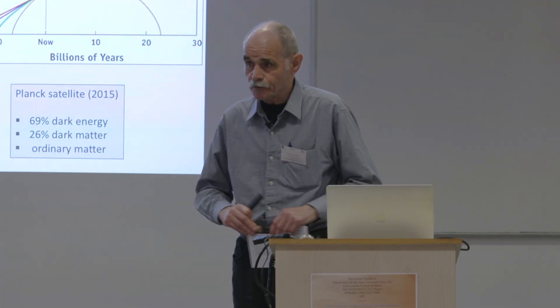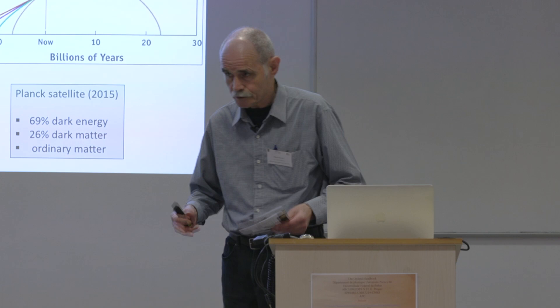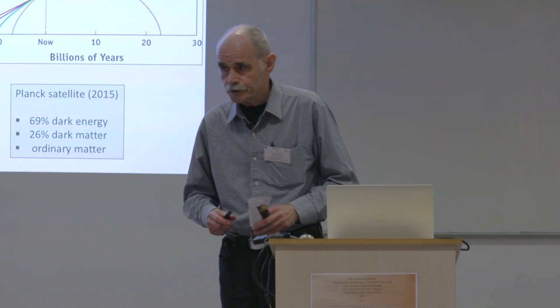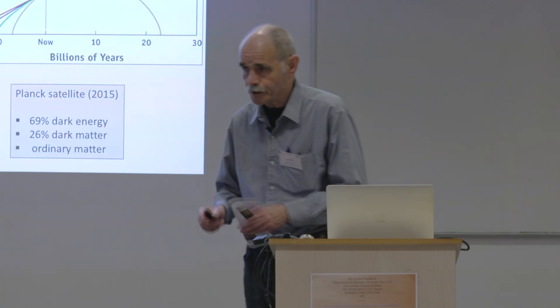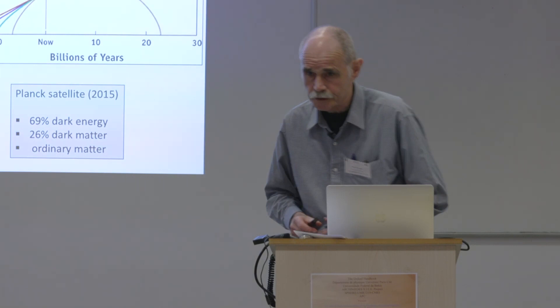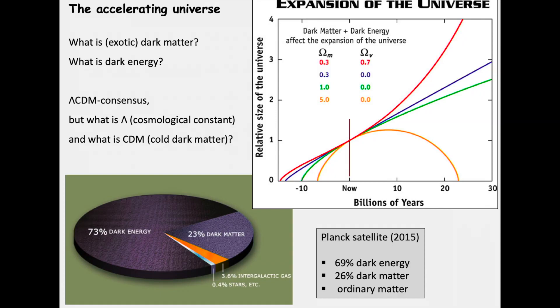That very important insight dates from about 2000, and it is a defining feature of what is known as the standard cosmological model — sometimes the consensus model, and sometimes the Lambda CDM model — where lambda stands for the cosmological constant and CDM stands for cold dark matter. That is a very successful model, but like most successful models it is not without its problems.